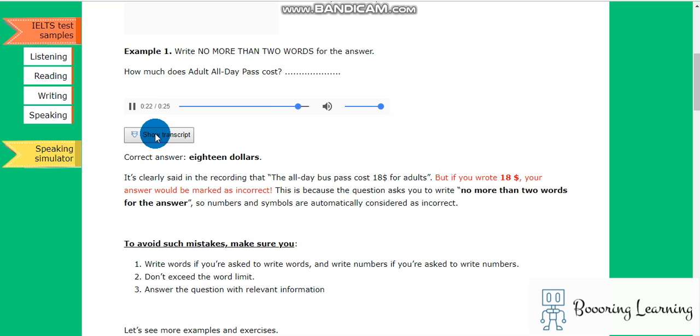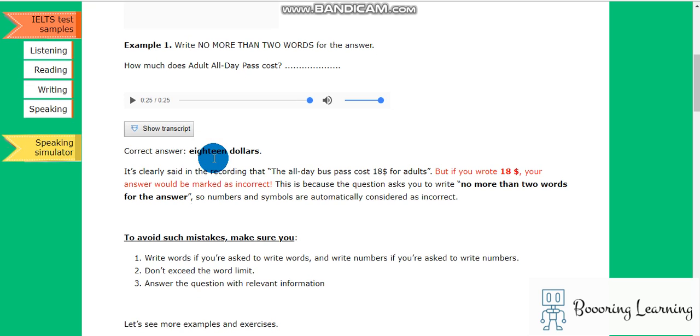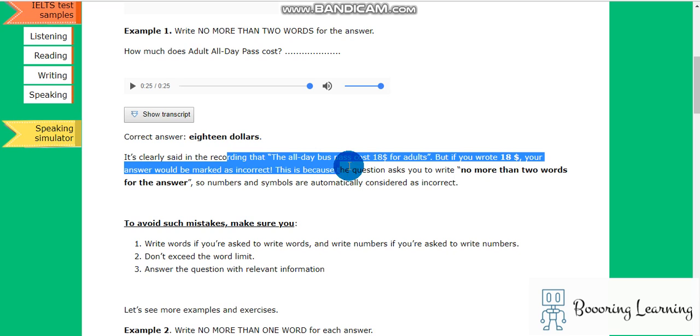Children between the ages of 5 and 12 pay half the adult fare. The correct answer is eighteen dollars. It is clearly said in the recording that the all-day bus pass costs eighteen dollars for adults. But if you write eighteen dollar, your answer will be marked as incorrect.